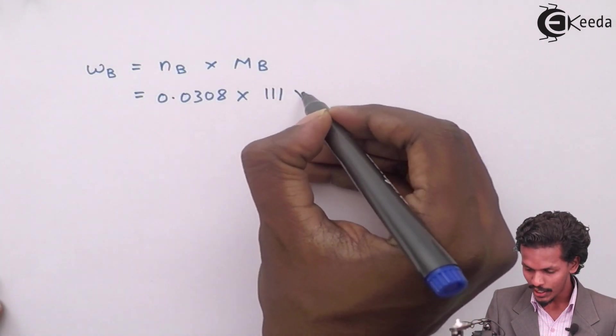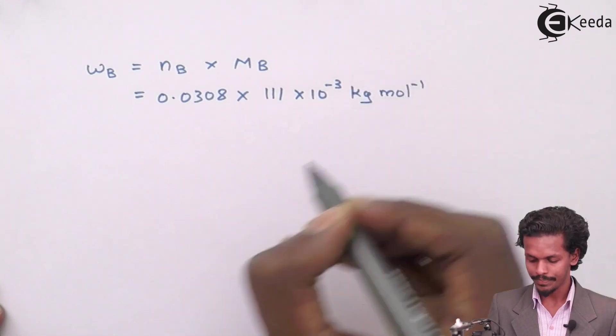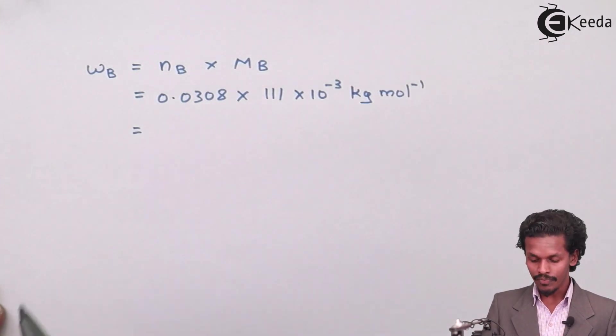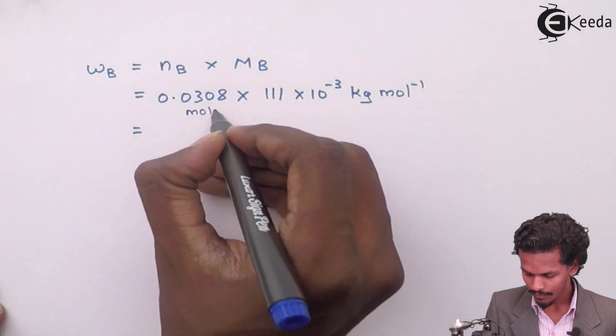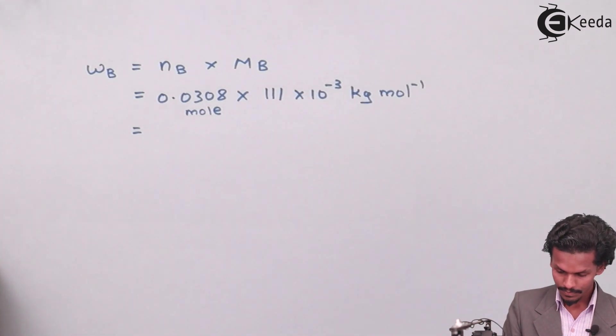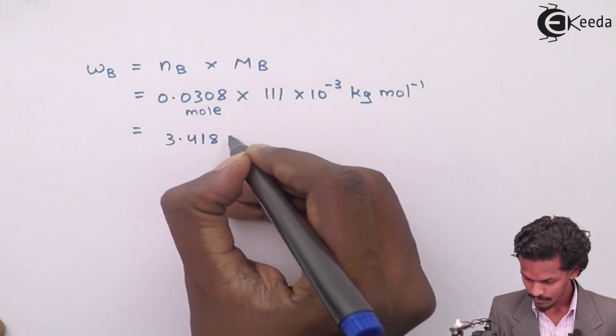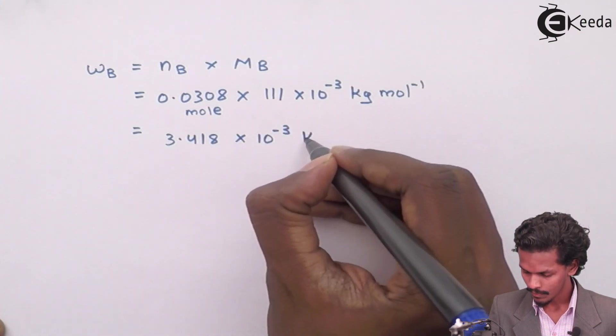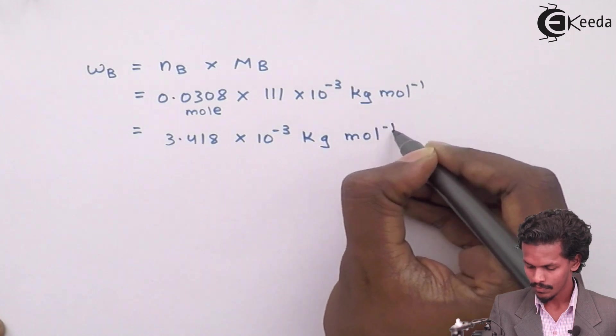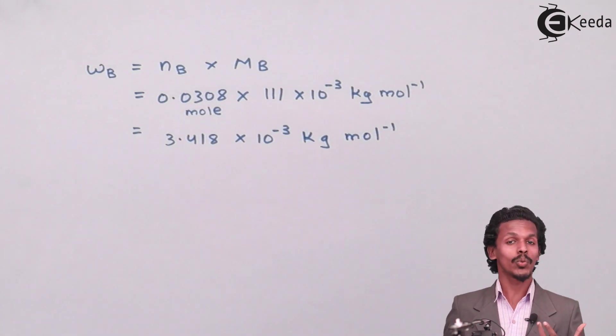The value of nB that we have got right now was 0.0308 mole. And the value of MB that we have determined or we have extracted from the given question was 111 into 10 raised to minus 3 kg per mole. So I will multiply this and let us see what is the result. So it is 3.418 into 10 raised to minus 3 kg.